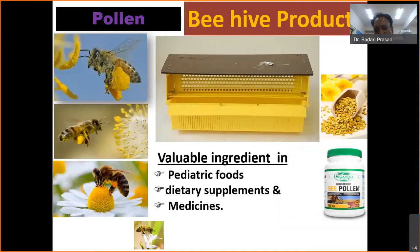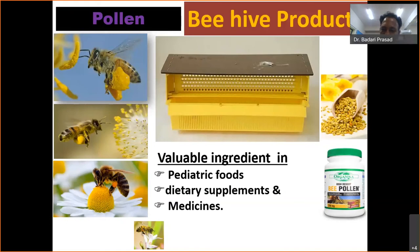Another important byproduct of apiculture is pollen. It is used as a food and dietary supplement for athletes and also consumed as a medicine. Bees directly collect pollen from flowers and carry it to the hives. Before they enter the hives, we keep a pollen extractor in front of the colonies to collect the pollen. Pollen is priced around 5,000 to 6,000 rupees per kg in the market. Once collected, it is shade-dried and filled in boxes for regular consumption as a dietary supplement.